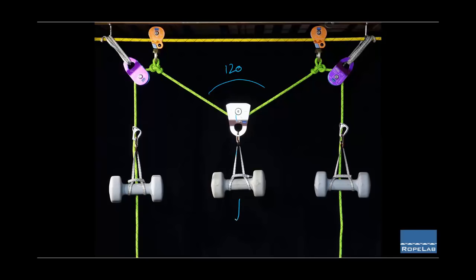So our rule of thumb tells us that if we have 100 applied here, then that means we should have 100 on this anchor and 100 on this anchor. But why is that the case?